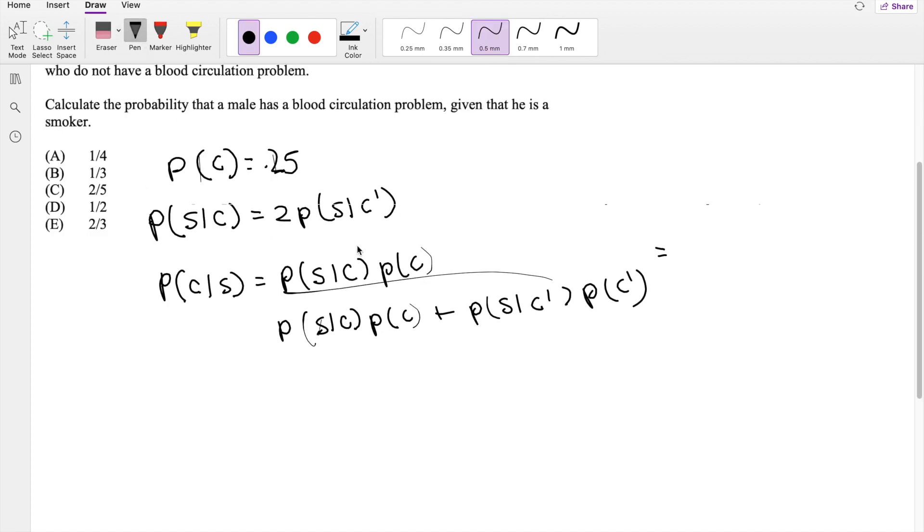So I'm actually going to put, so then probability of S given C, we know is to be this here. So that's 2 probability of S given not C, times the probability of C, which is 1 fourth.